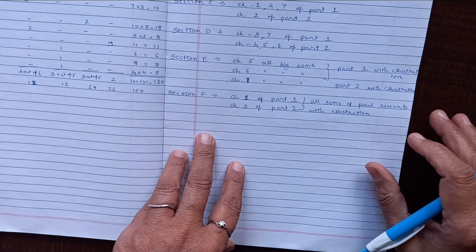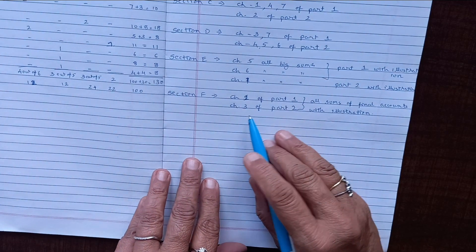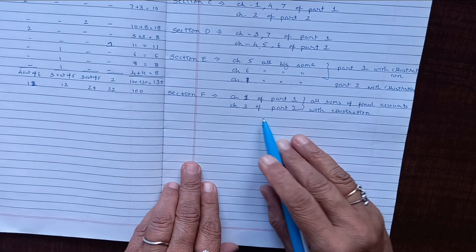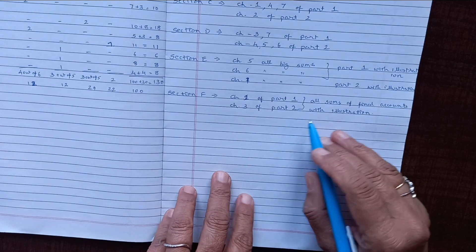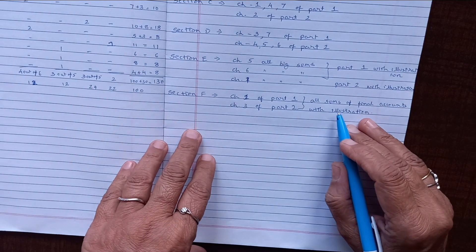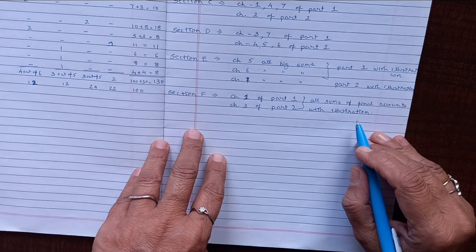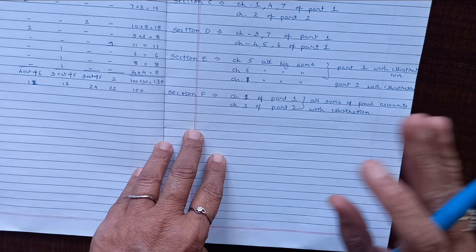The next long question of 11 marks is chapter 3, final account of part two. Again, here very few questions are there in that chapter. All illustrations and the exercise long questions compulsorily you have to go through.